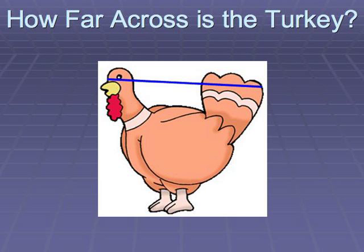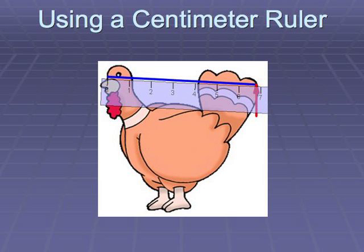Suppose we want to measure how far across the turkey is from his head to his tail feathers. We can use a centimeter ruler to measure him, but if we do that we can only measure to the nearest centimeter. You can say he measures between six and seven centimeters, he measures more than six and a half centimeters, he's a little less than seven centimeters, but you can't get more precise than that.